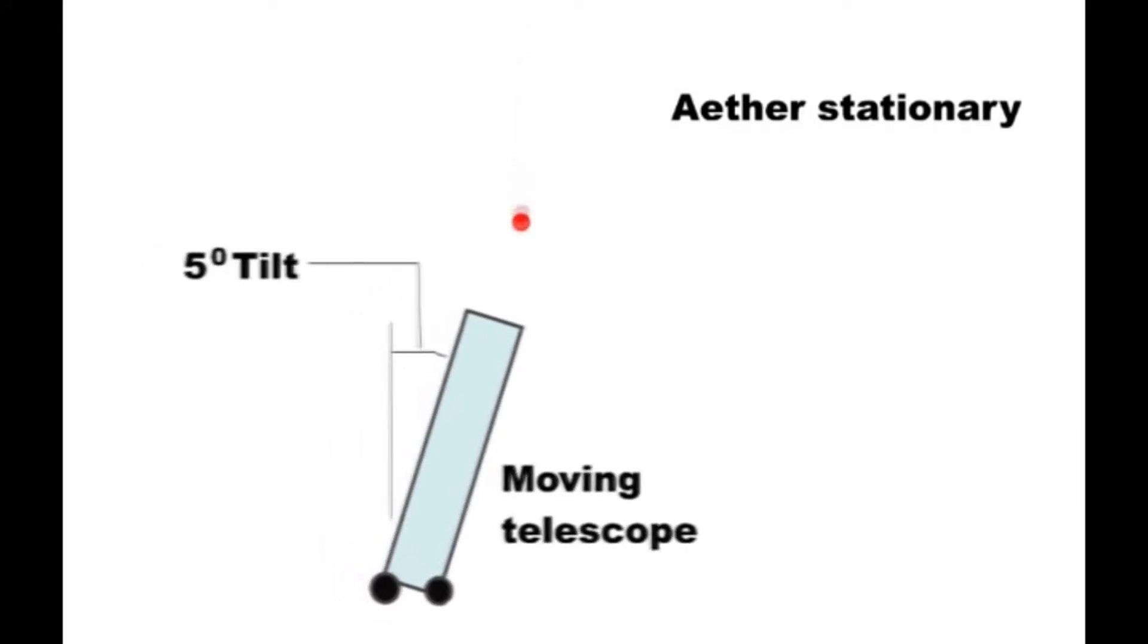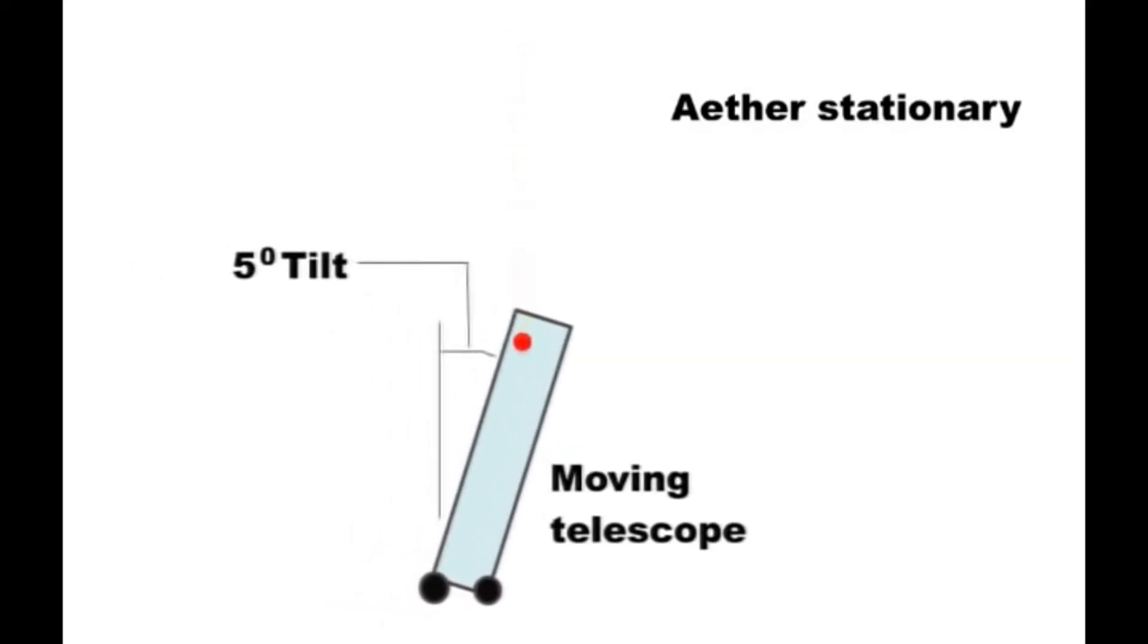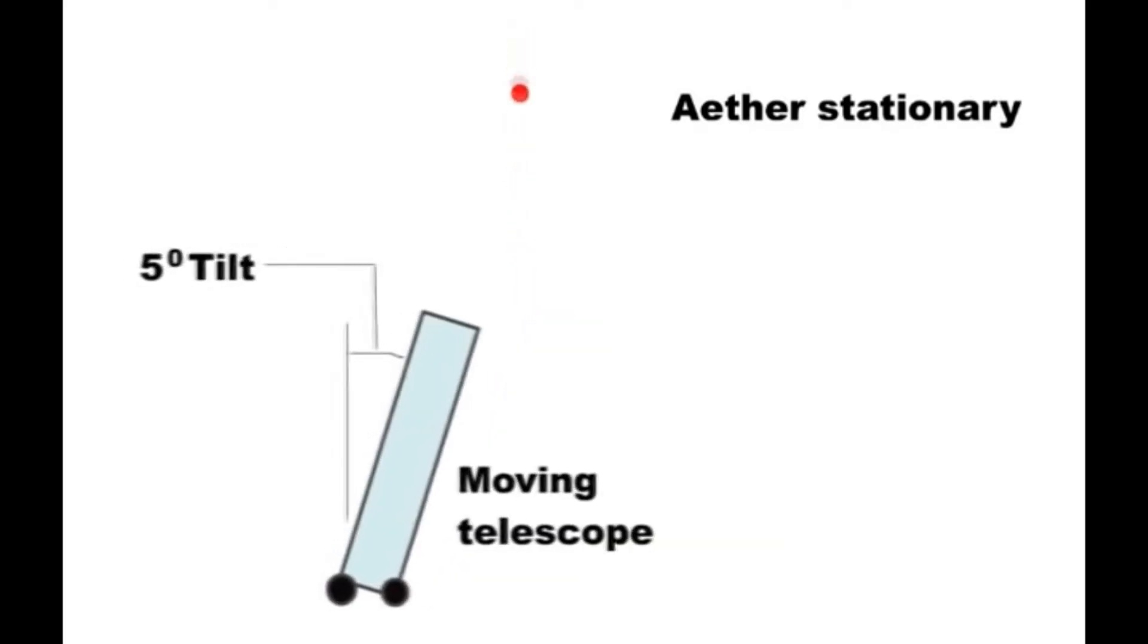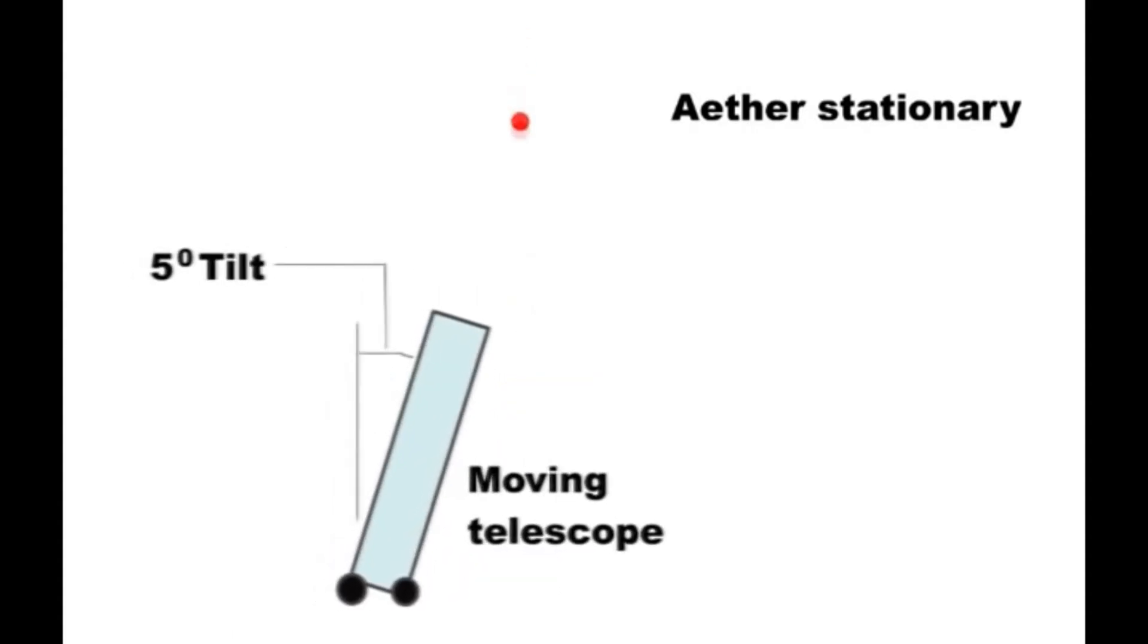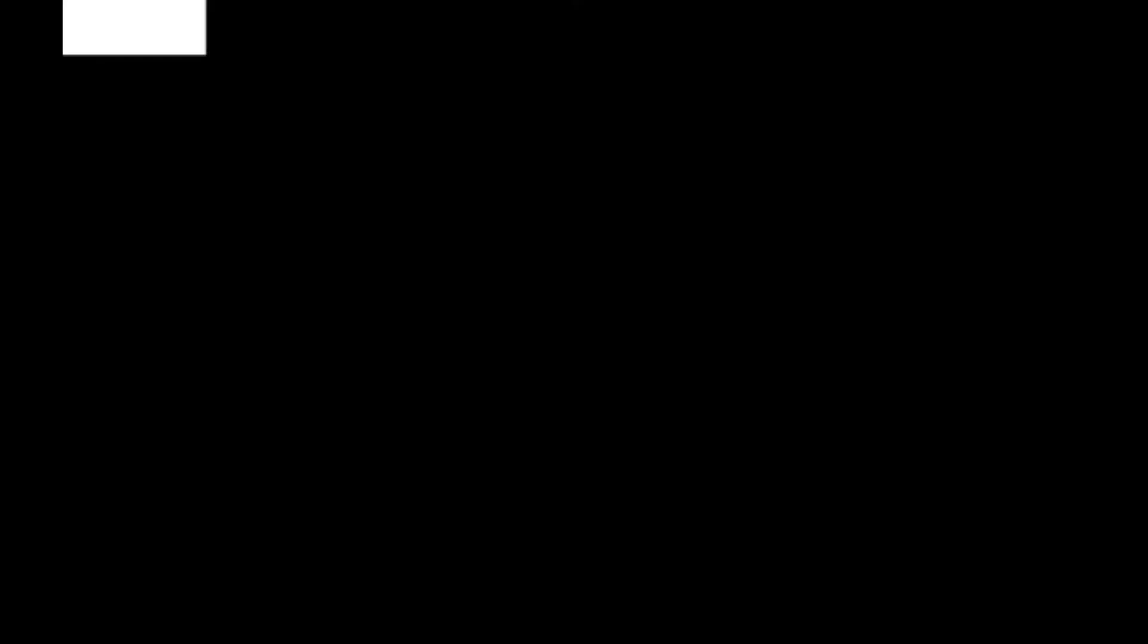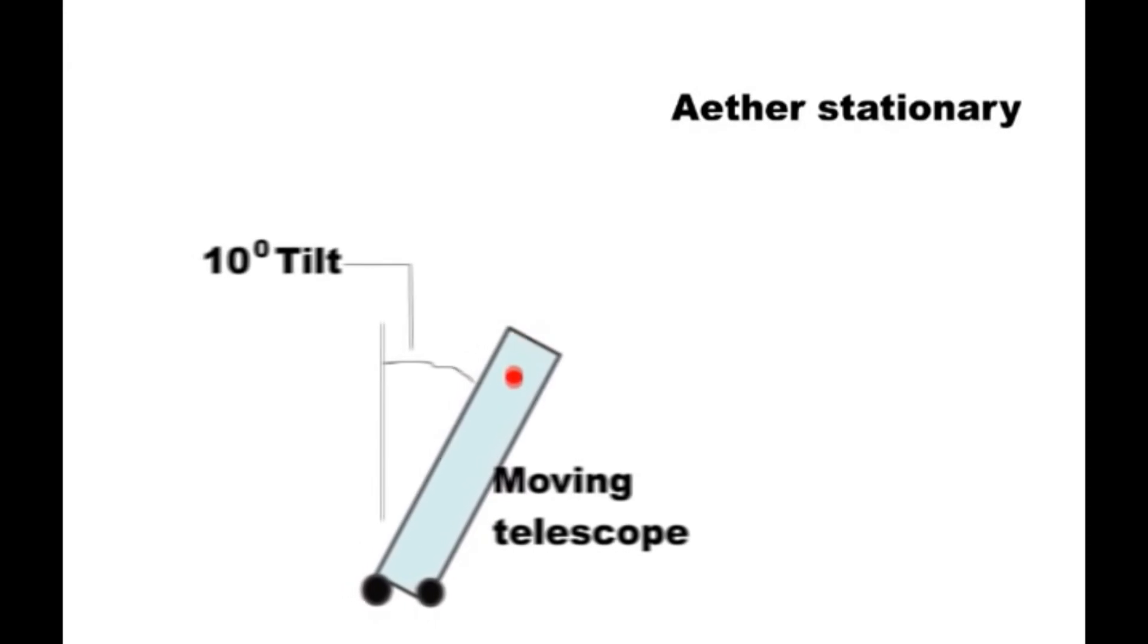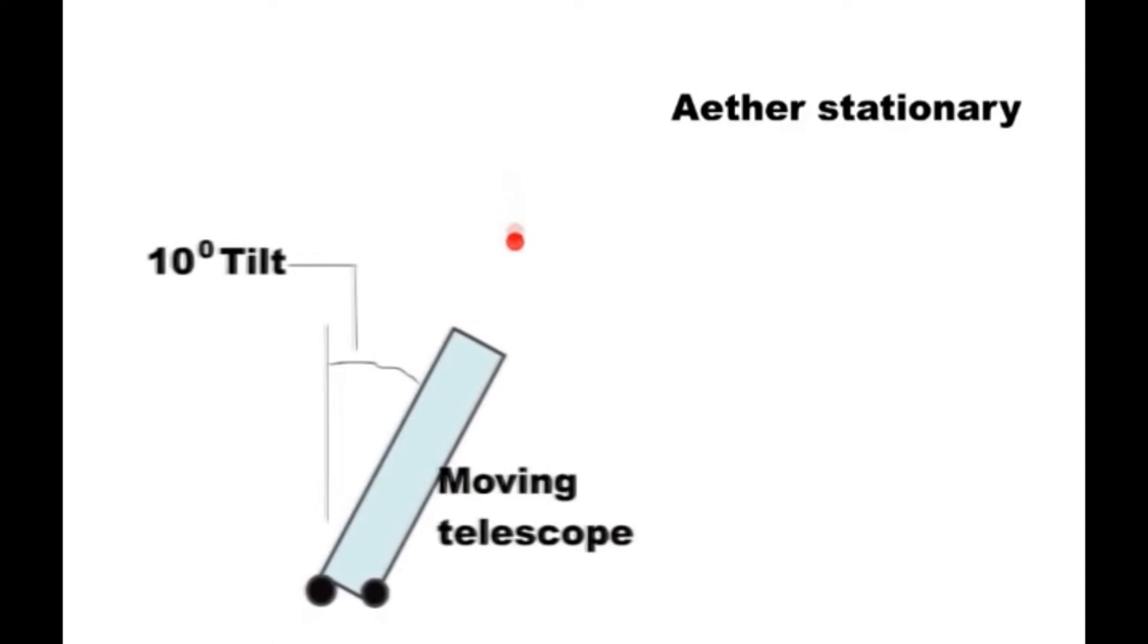So here is the moving telescope filled with water, tipped at 5 degrees, and you can see that the starlight does not now reach the eyepiece at the bottom. However, if the telescope is tipped further, say 10 degrees, then the starlight will then be visible again in the eyepiece. It has to be tipped further because the light is now slower when in the telescope.